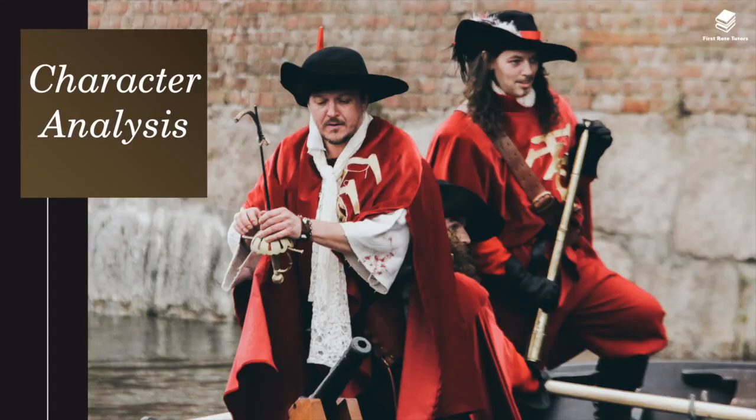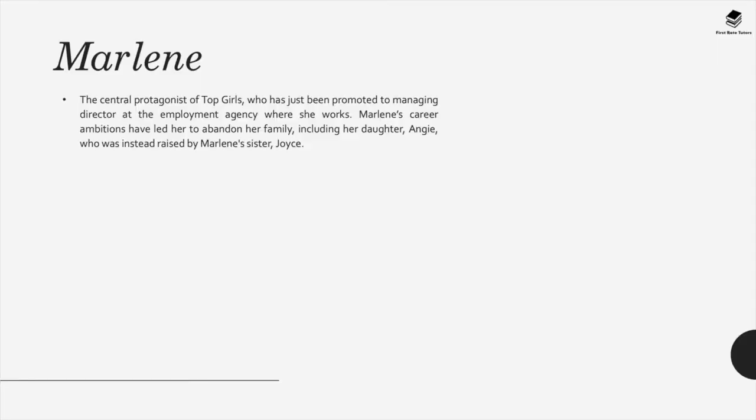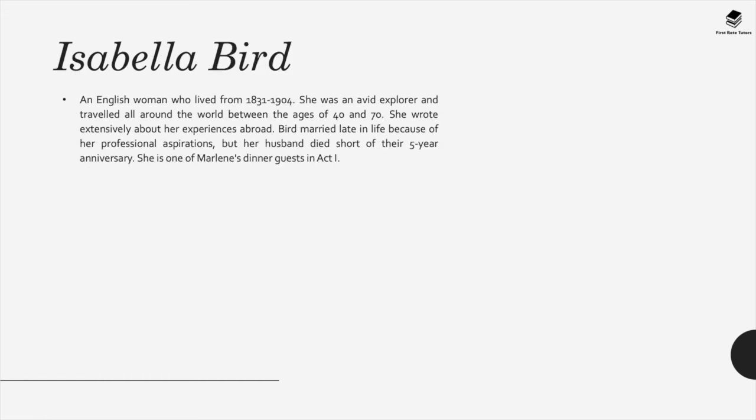On to character analysis. Marlene is the central protagonist of Top Girls, who has just been promoted to managing director at the employment agency where she works. Marlene's career ambitions have led her to abandon her family, including her daughter Angie, who was instead raised by Marlene's sister Joyce.